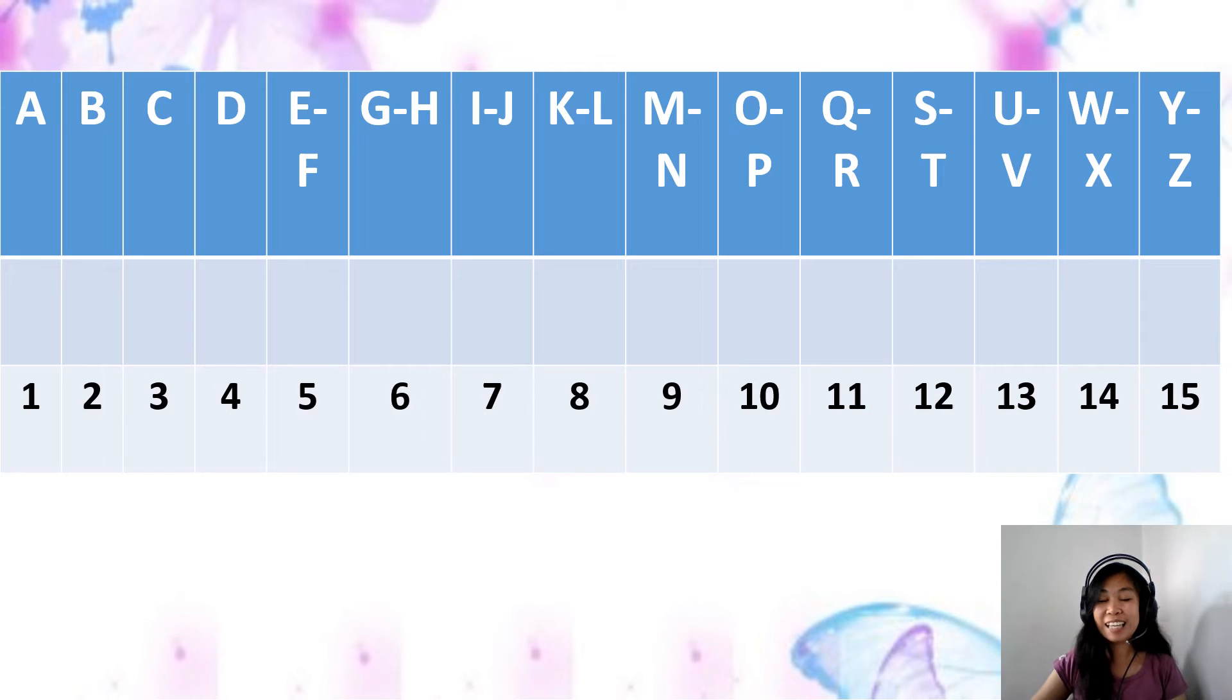Therefore, in this set of encyclopedia, what volume should you get to look for an article about brown bears? Very good. Volume number 2 because bear starts with letter B. Is that clear?